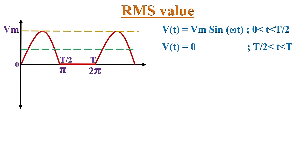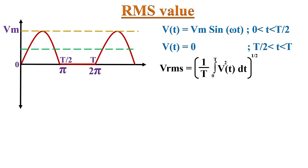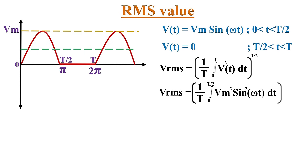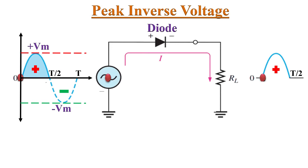The next parameter is the RMS value. The RMS value of any given signal is expressed by the square root of (1/T) · ∫₀ᵀ v²(t) dt. Inserting the expression for v(t) and evaluating this equation, the RMS value of the half-wave rectifier comes out as Vm / 2.